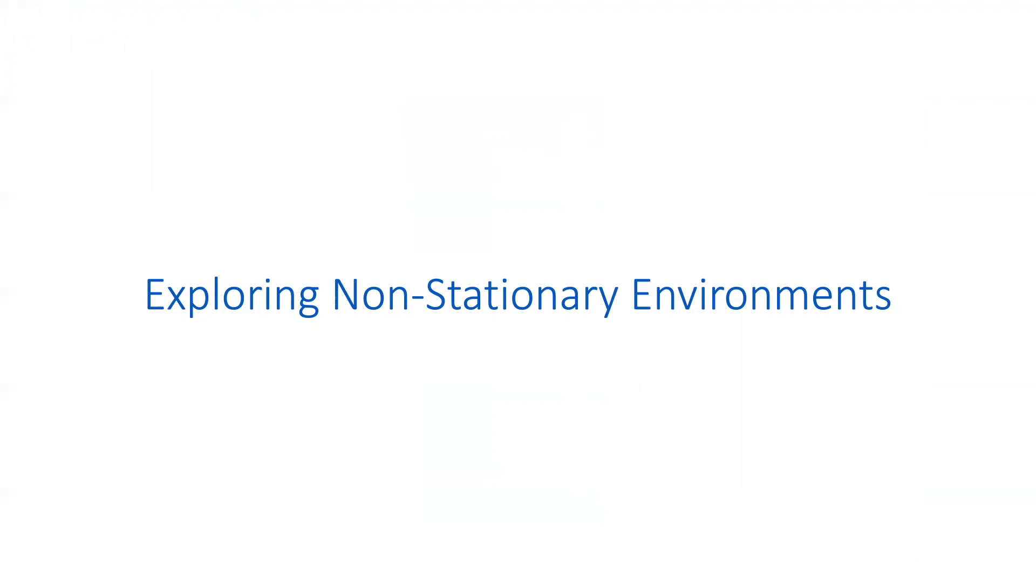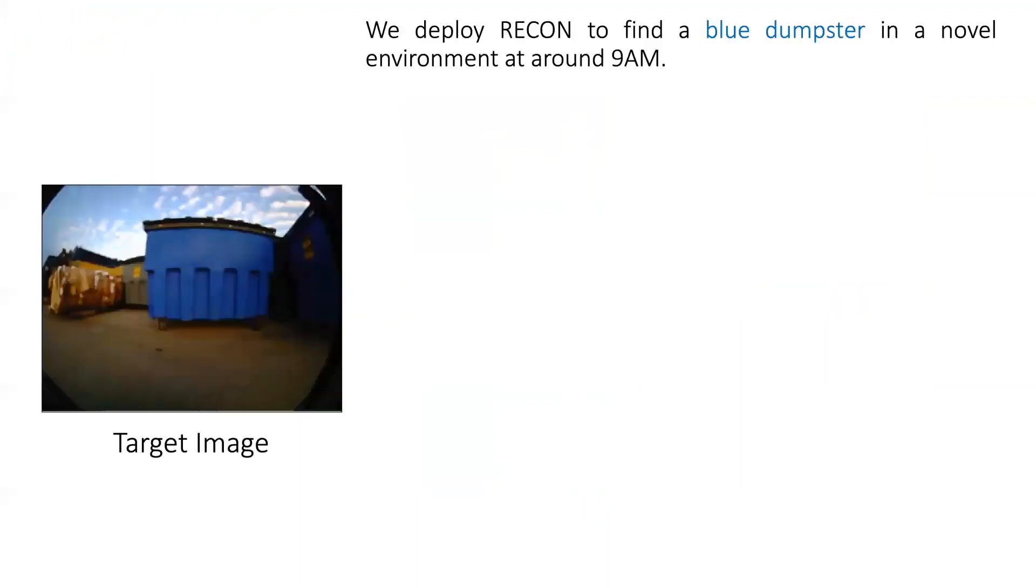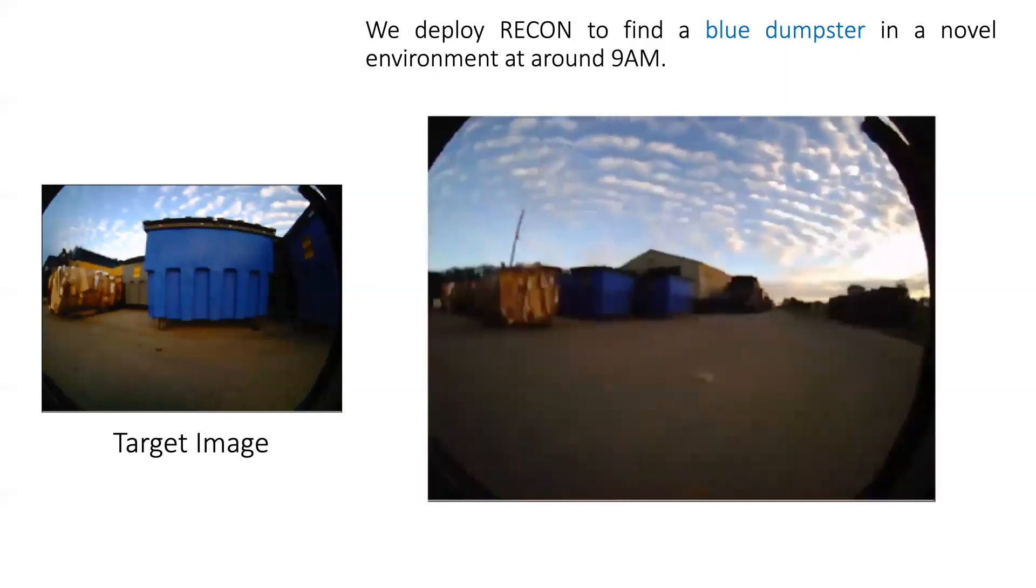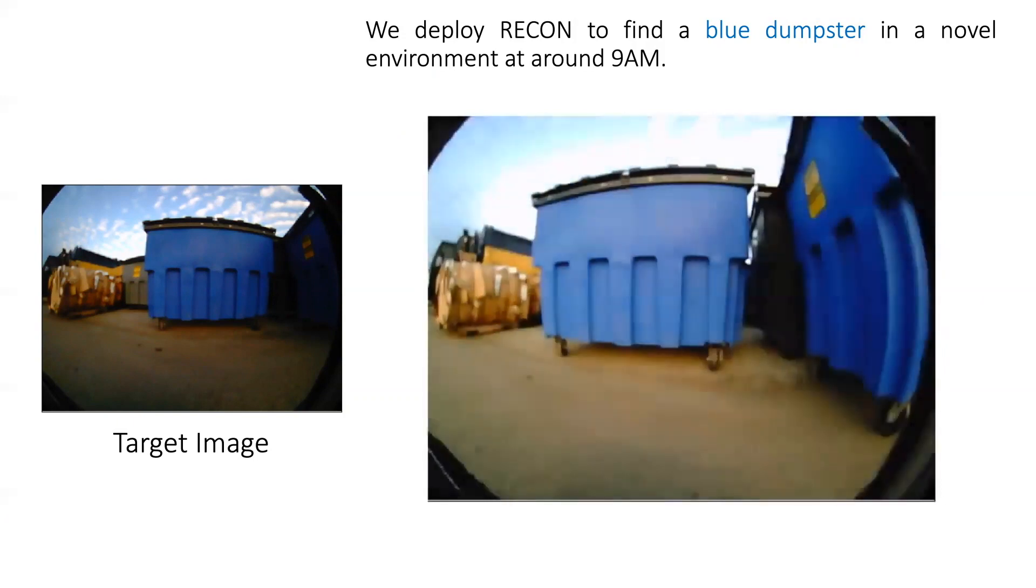An important characteristic of a reliable open-world navigation system is robustness to seasonal changes in appearance and dynamically evolving environments with obstacles. To examine this, we deploy RECON to find a blue dumpster in an environment at 9 a.m. RECON is able to successfully find the dumpster in the morning.